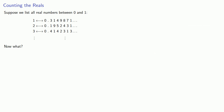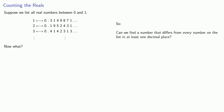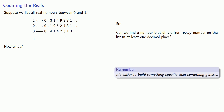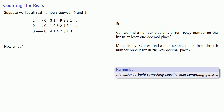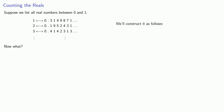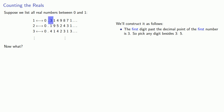If this list includes all real numbers between 0 and 1, then every number is going to be someplace on that list. The question you've got to ask yourself is: can we find a number that differs from every number on the list in at least one decimal place? Or, because it's easier to build something specific than something generic, can we find a number that differs from the kth number on our list in the kth decimal place? And the answer is yes. We'll construct our number as follows: the first digit past the decimal place of the first number is 3, so pick any digit besides 3 — how about 5?